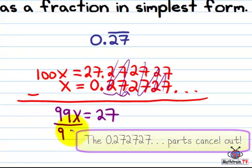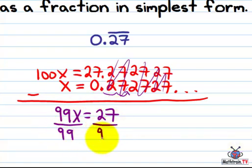And now we can just do our simple algebra of dividing both sides by 99, inverse operation. And we have x equals 27 over 99.